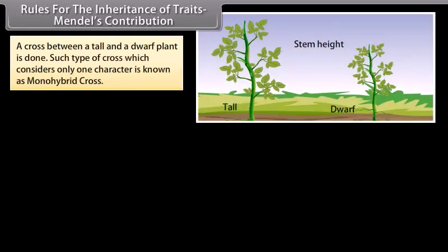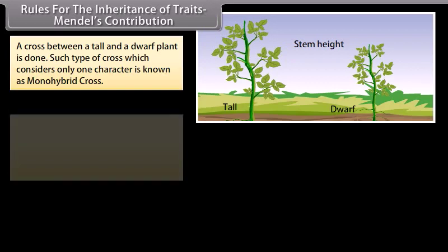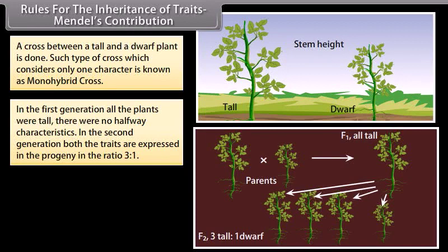A cross between a tall and a dwarf plant is done. Such type of cross which considers only one character is known as monohybrid cross. In the first generation, all the plants were tall. There were no halfway characteristics. In the second generation, both the traits are expressed in a progeny in the ratio three is to one.